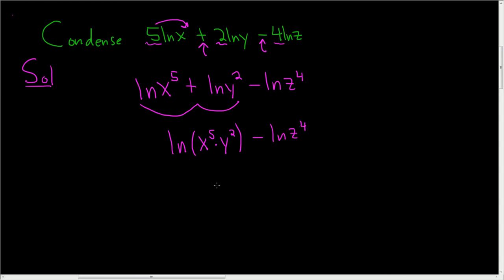And now we'll use the quotient rule because we have a minus sign. So this is the natural log of x to the fifth times y squared, all divided by z to the fourth power.